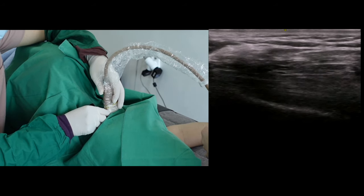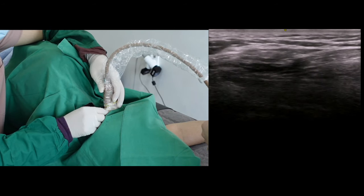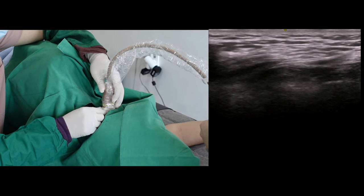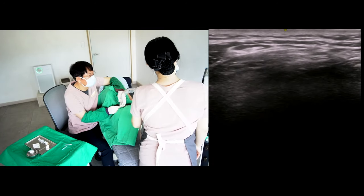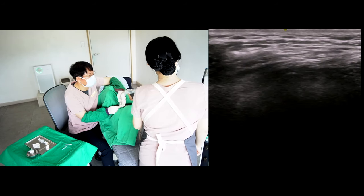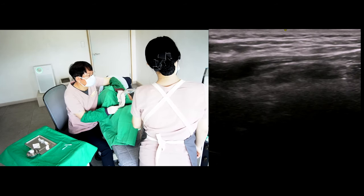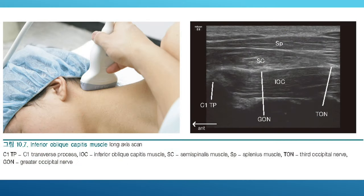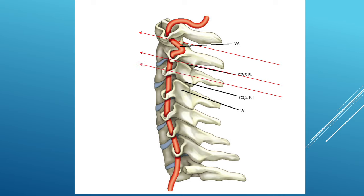I spend a lot of time on pre-scanning. The scanning initiates from the oblique scanning of the inferior oblique capitis muscle and counts down to the lower cervical spine. After identifying the inferior oblique capitis muscle, I slide the probe down parallel to that muscle. This shows the orientation of the probe and the scanning sequence.